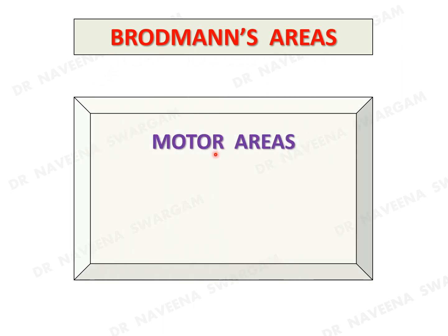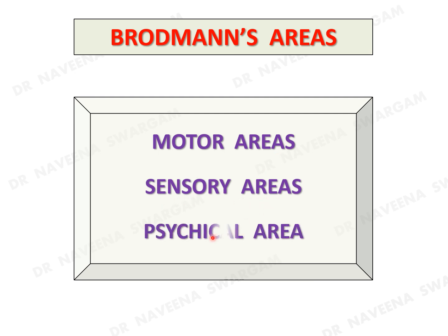Brodmann's cortical areas are functionally divided into motor areas, sensory areas, and a psychical area. We will be learning about each area with its location, connections, and functions.